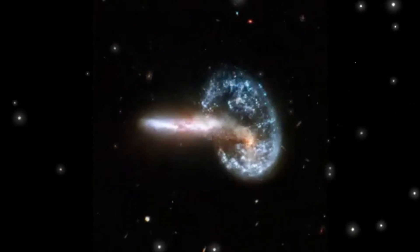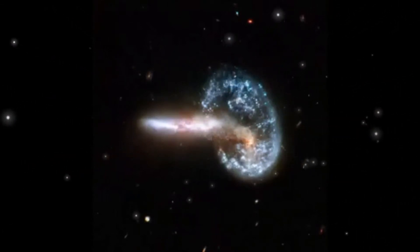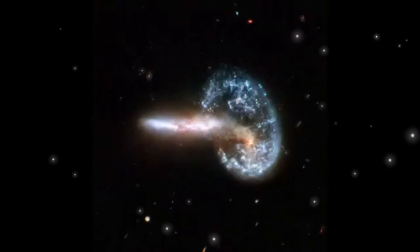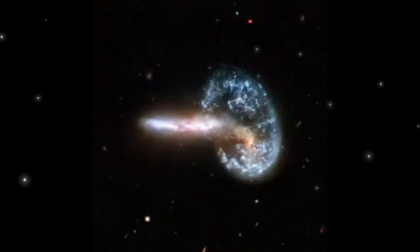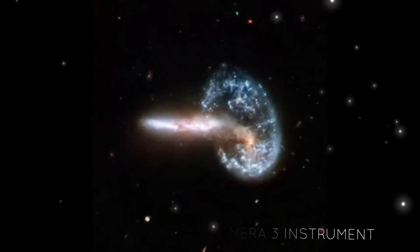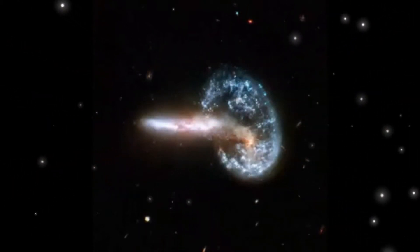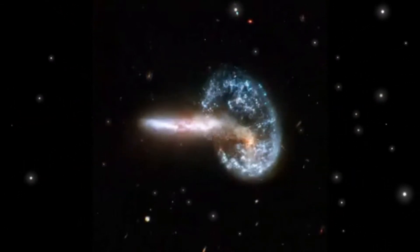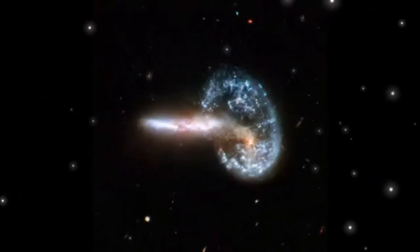Arp 148 was imaged by the Hubble Space Telescope as part of a survey of what are thought to be colliding galaxies. The image was taken with the Wide Field and Planetary Camera 2 instrument and was released along with 59 other images of this type in 2008 for the Space Telescope's 18th anniversary.